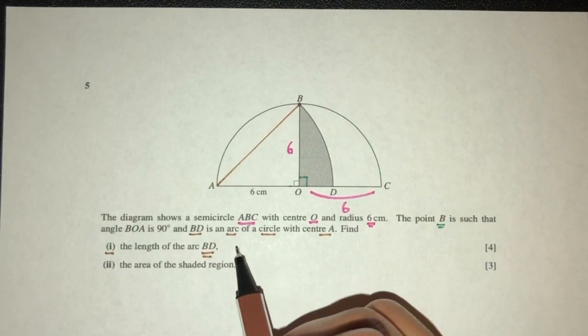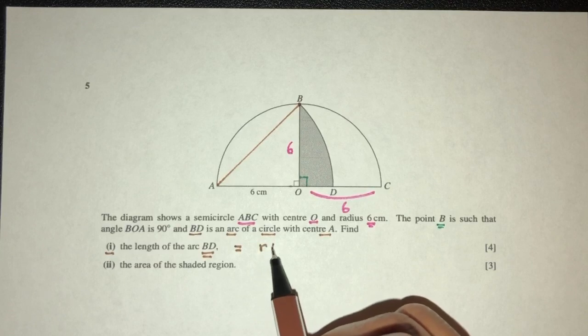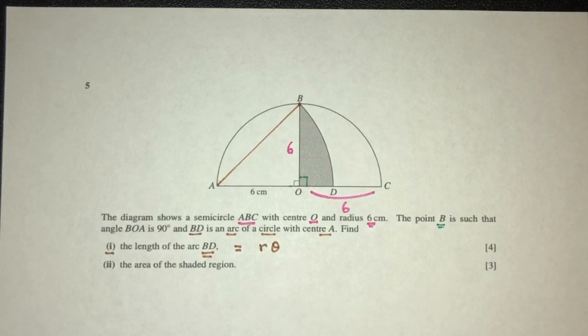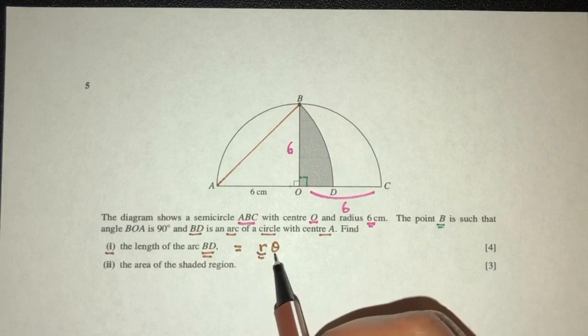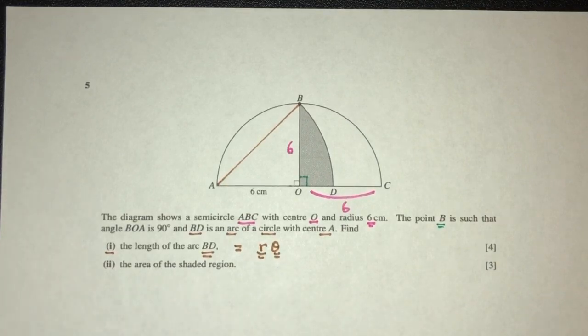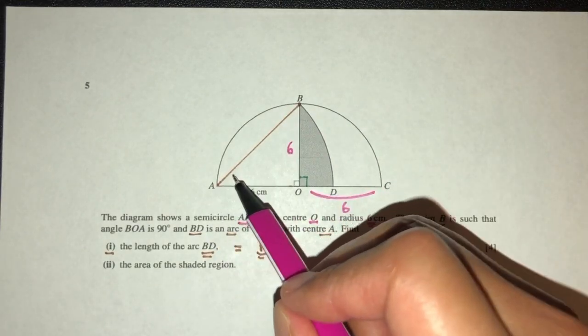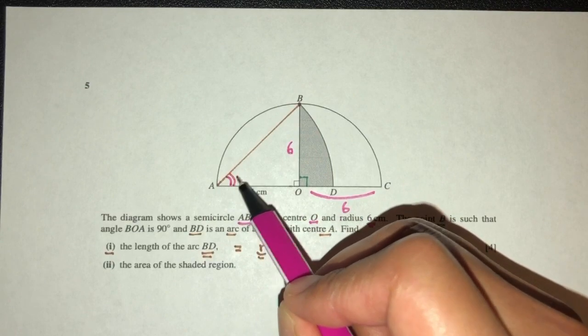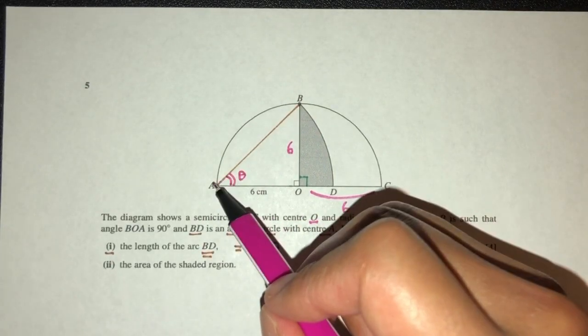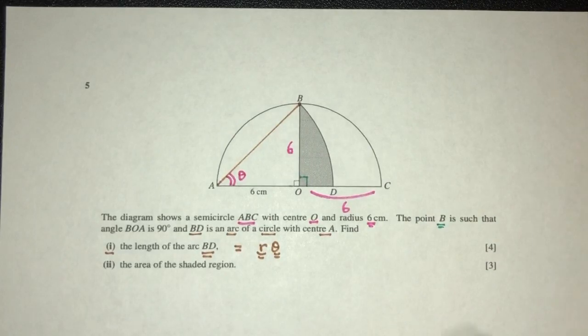Usually we find the length of arc by using our formula, which is R times theta. R is the radius, theta is the angle inside. By observation, here the angle is theta that we don't know, and the radius is here that we don't know either. So we have to find those values first before we find the arc length BD.